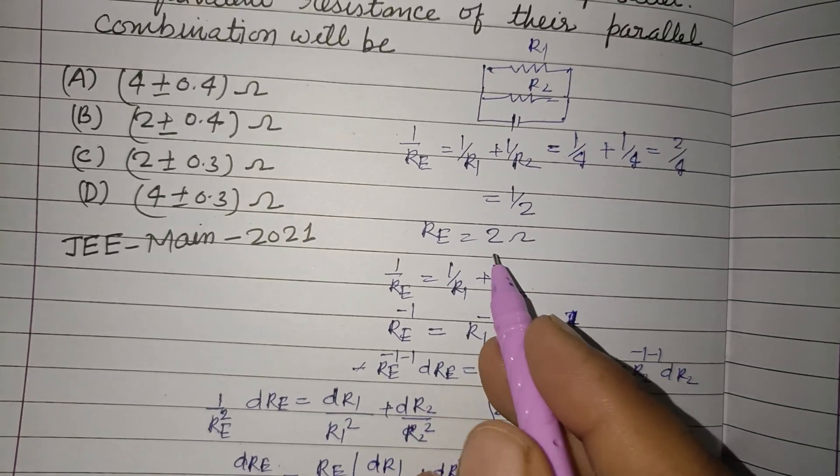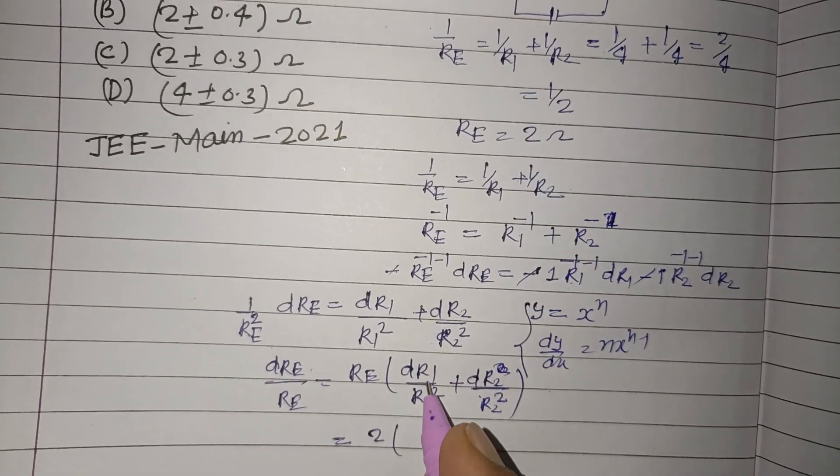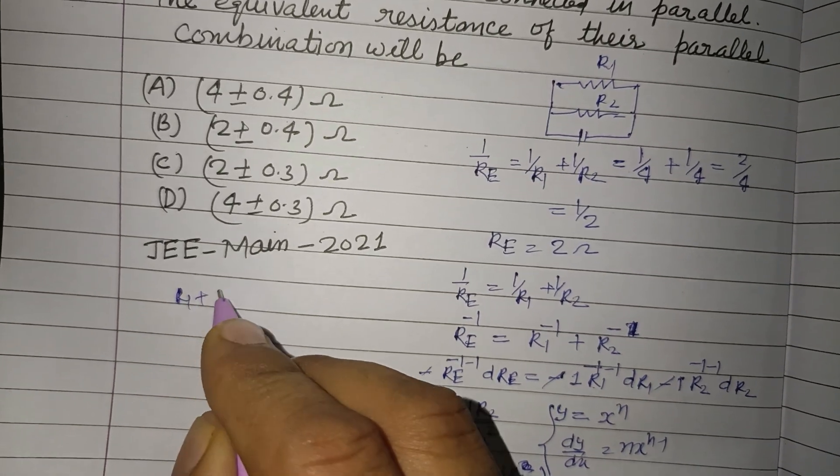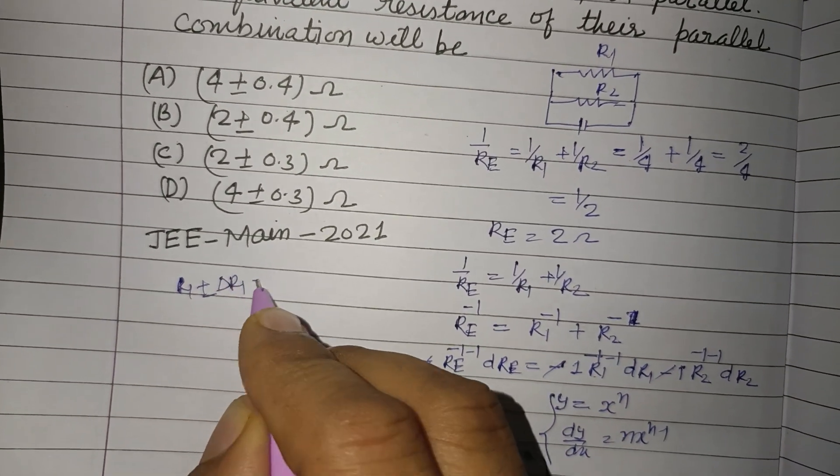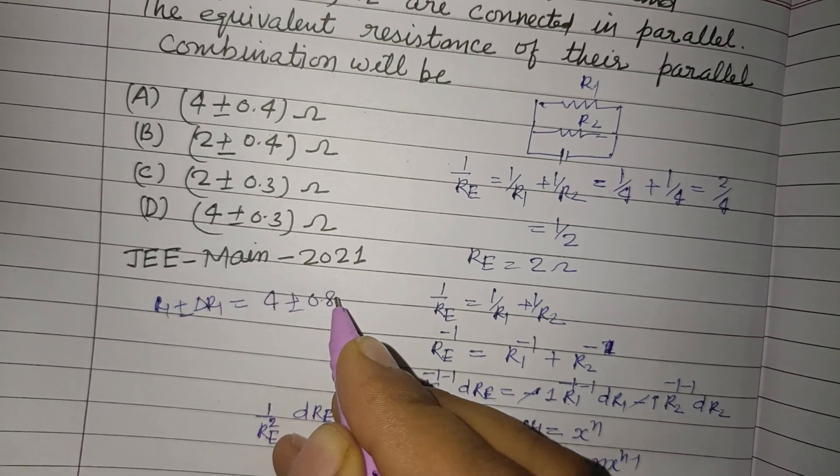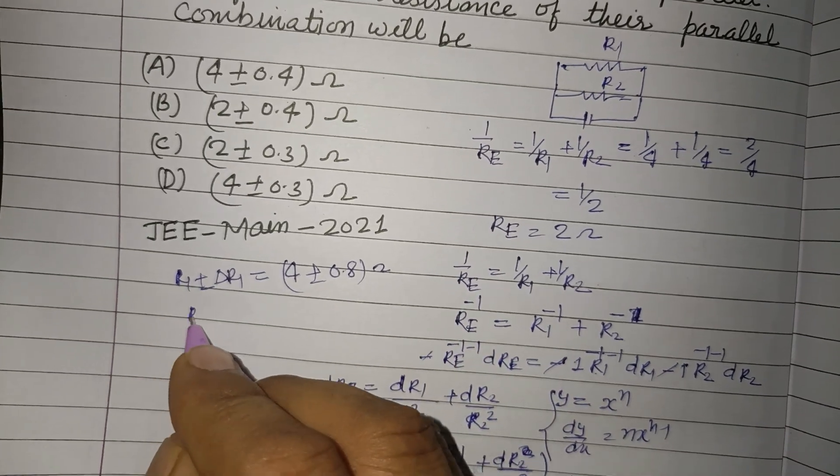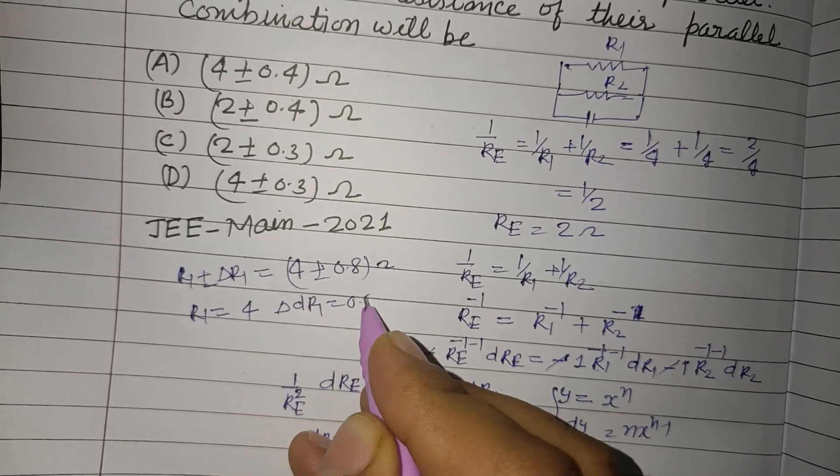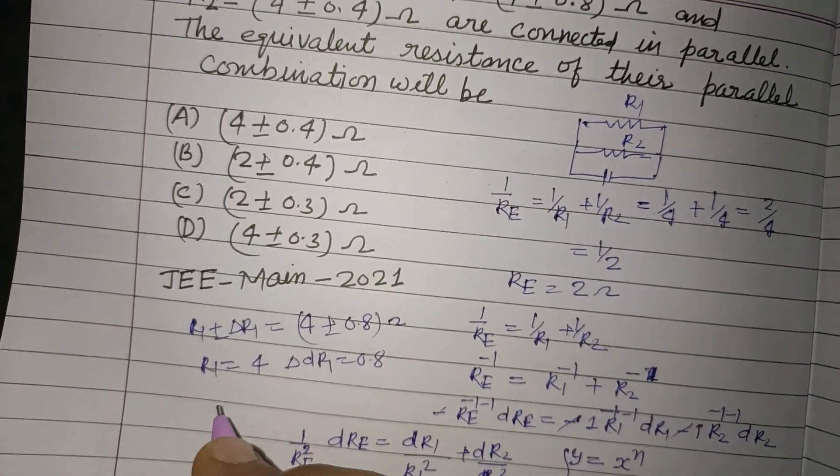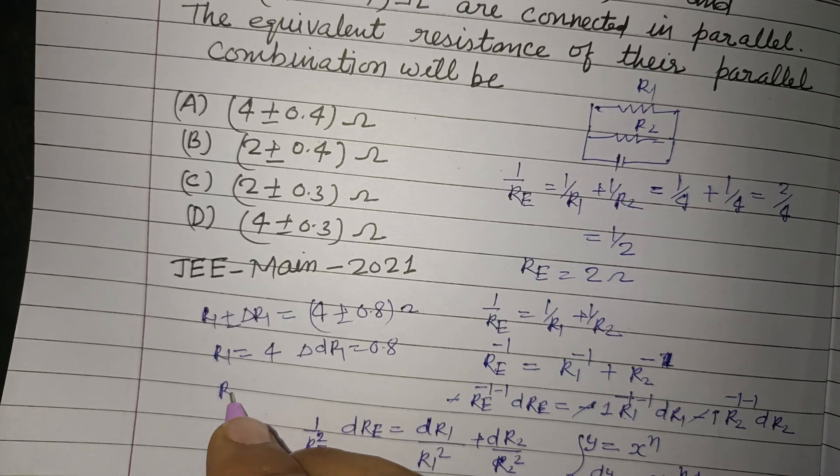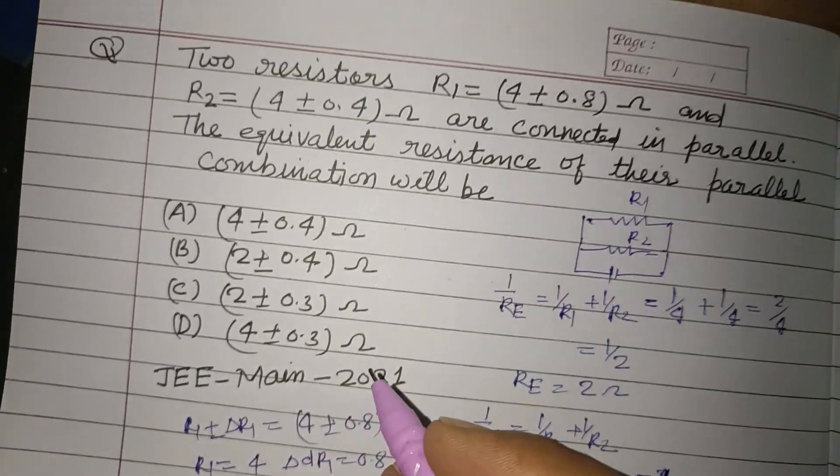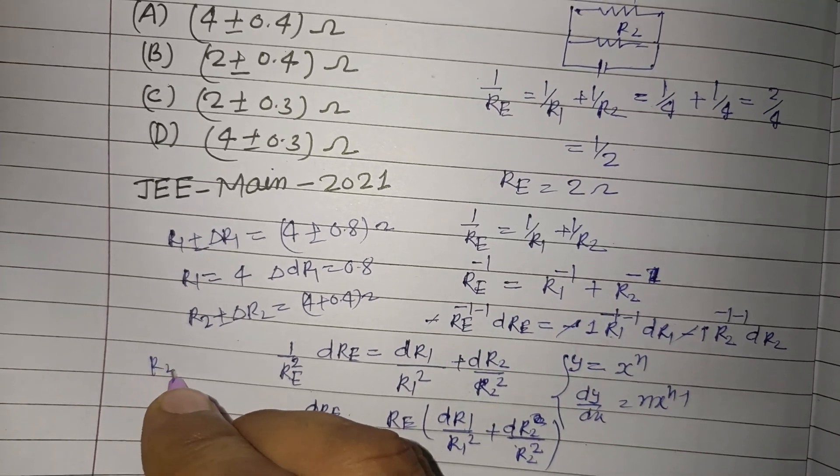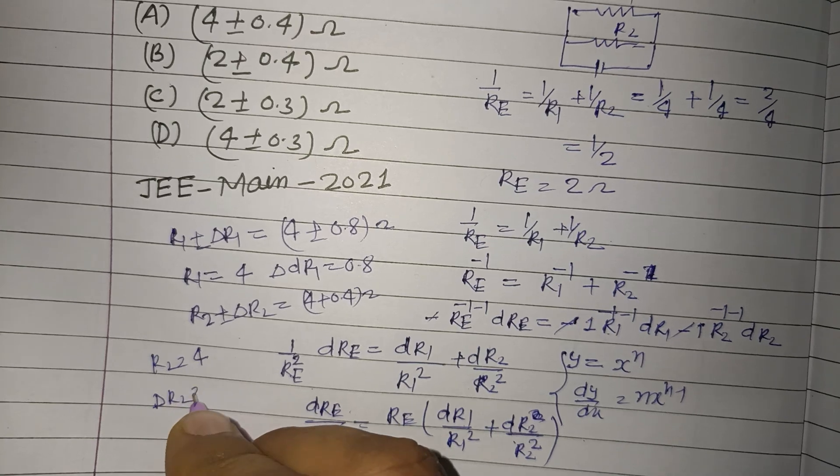So RE is here 2 ohm. dR1 is given in the question, which is 0.8. Here it is R1 plus minus dR1, which is 4 plus minus 0.8 ohm. So from here R1 is 4 and dR1 is 0.8. And it is also given R2 plus minus dR2, that is 4 plus 0.4 ohm. So from here R2 is 4 and dR2 is 0.4.